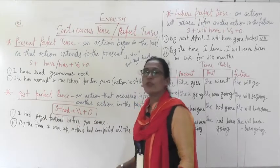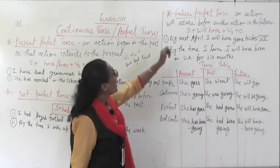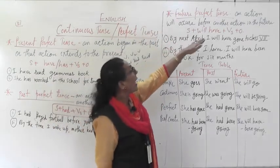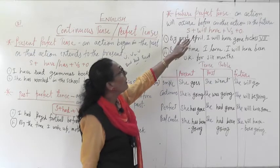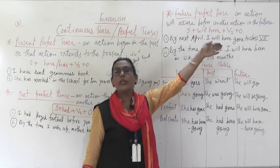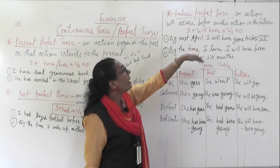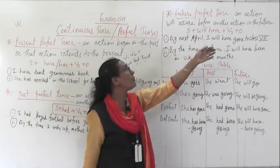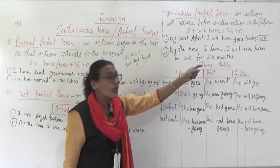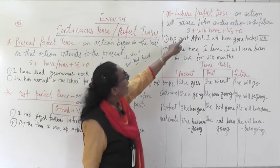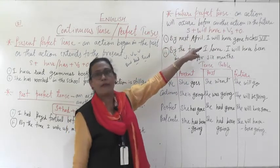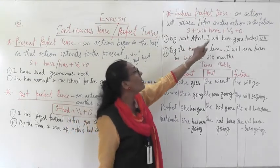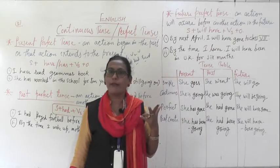In past perfect tense, the structure is: S + had + V3 + Object. Now, future perfect tense: an action will occur before another action in the future. Structure: S + will have + V3 + Object.